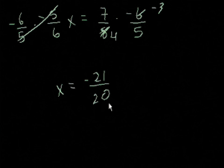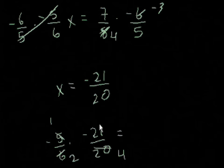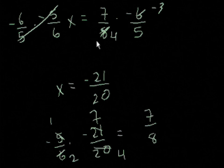And assuming I haven't made any careless mistakes, that should be right. Actually, let's just check that real fast. So minus 5/6 times minus 21 over 20. Well, that equals, on this 5, we could make that a 1, turn this into a 4, make this into a 2, make this into a 7. Negative times negative is positive, so you have 7. 2 times 4 is 8. And that's what we said we would get.